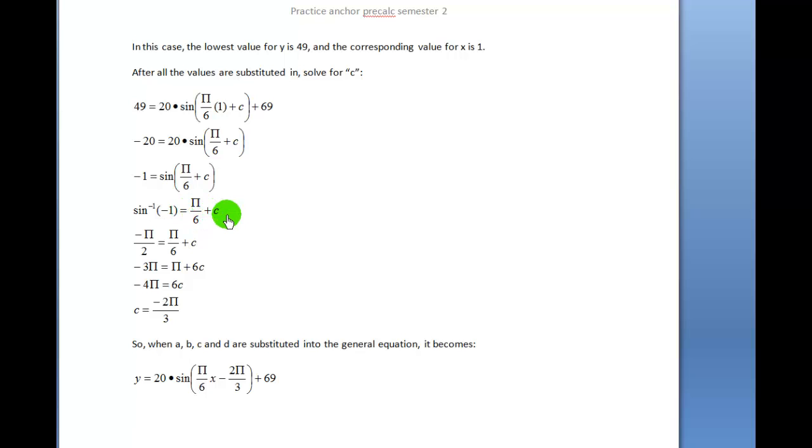Keep in mind that the values for the inverse sine are going to be between negative π over 2 and π over 2. If I take the inverse sine of negative 1, there could be an infinite number of values for that, but because we're going to restrict those values to being between negative π over 2 and π over 2, the value that we come up with for the inverse sine of negative 1 is negative π over 2.